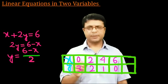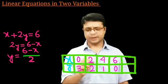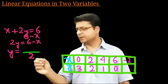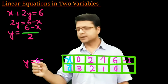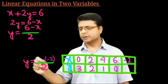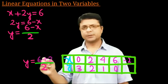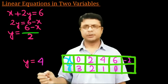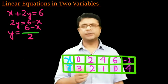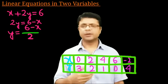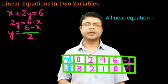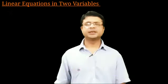Now let us also try a negative value. If x = −2, then y = (6 − (−2)) / 2 = 8/2 = 4. So x = −2 gives y = 4. In this way, by taking different values of x we get different values of y, and we can conclude that this type of linear equation has infinitely many solutions.